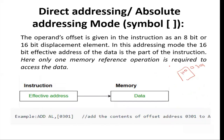Next is direct addressing mode, also called absolute addressing mode. Here the instruction gives us the effective address directly, and from that effective address we fetch our data. For example, the instruction 'ADD AL, 0301' means that at memory location 0301 we will find the data, and we will add it to the AL register.